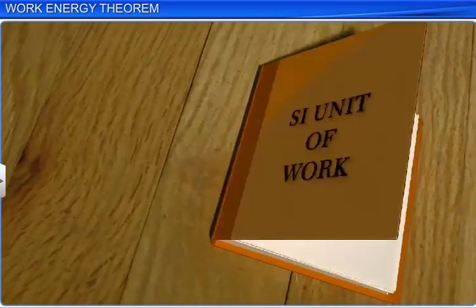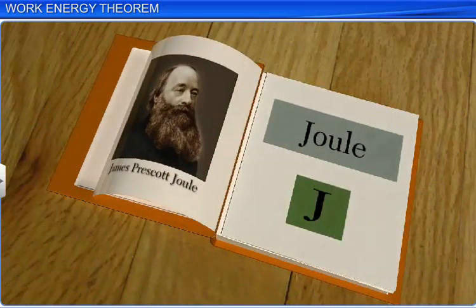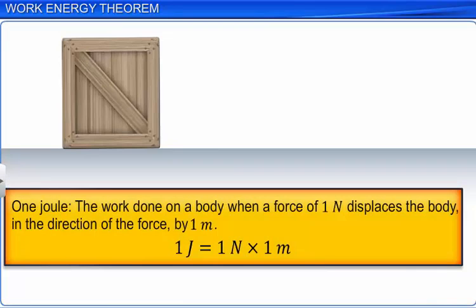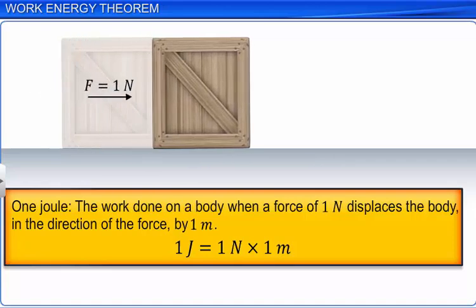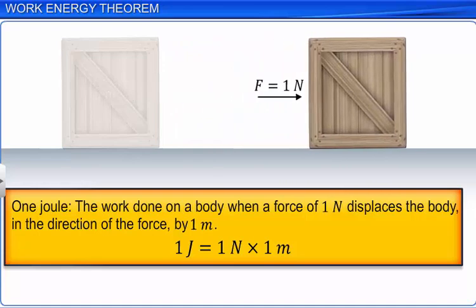The SI unit of work is joule, denoted by the letter J, named after the famous British scientist James Prescott Joule. Thus, 1 joule is defined as the work done on a body when a force of 1 N displaces the body in the direction of the force by 1 meter.